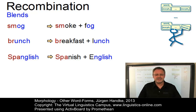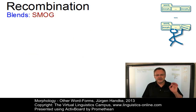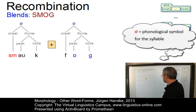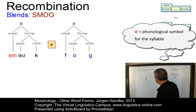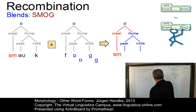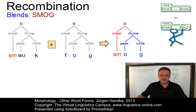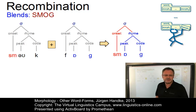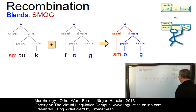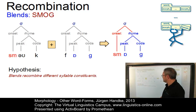Let us look at the internal syllabic structure of these items in detail. Starting with 'smog': two monosyllabic words are combined. You can see the syllable structure of both of them, and the result is a combination of the onset of 'smoke' and the rhyme of 'fog'. As a hypothesis, we can postulate on the basis of this particular blend that blends recombine different syllable constituents — onset plus rhyme, onset and peak plus coda, and so on and so forth.